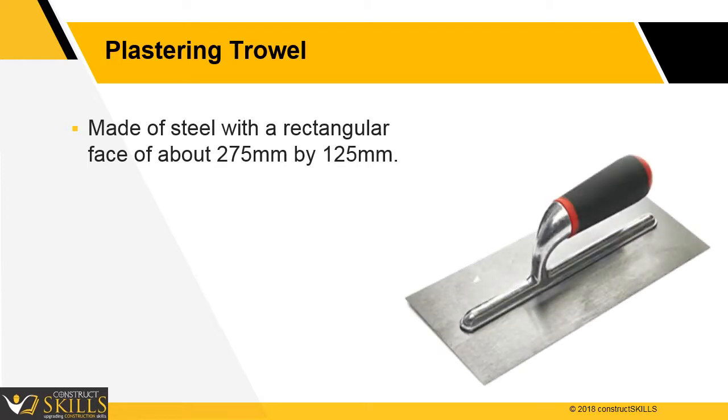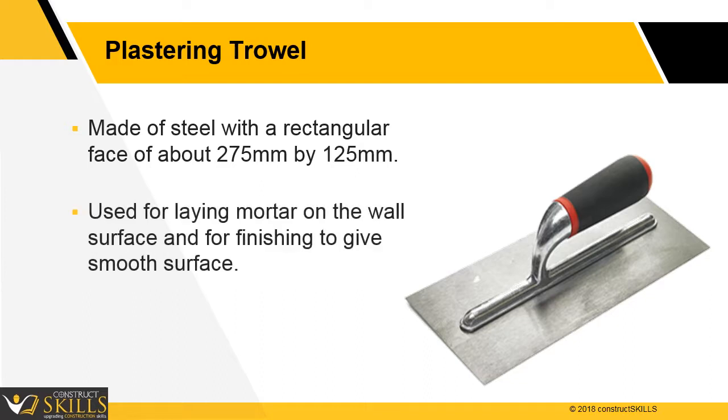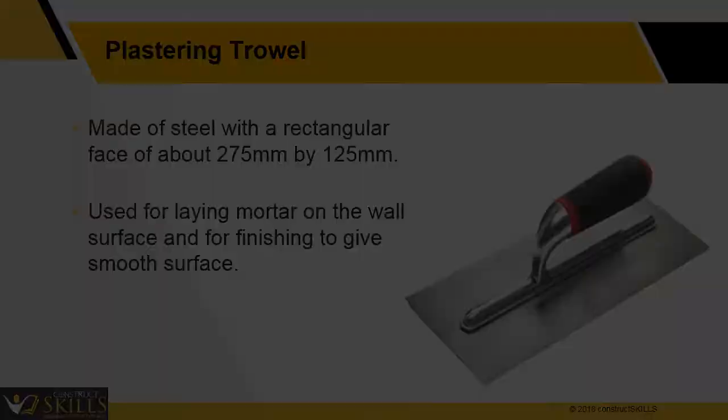Plastering trowel: this is made up of a steel plate having sizes of about 275 millimeters by 125 millimeters. It is used for laying the mortar on the surface and for finishing to give a smooth surface.